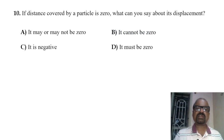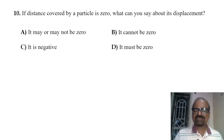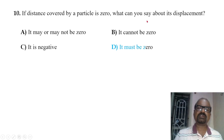If the distance covered by a particle is zero, what can you say about its displacement? If distance is zero, then displacement must also be zero. Distance is zero means displacement is zero — very simple.